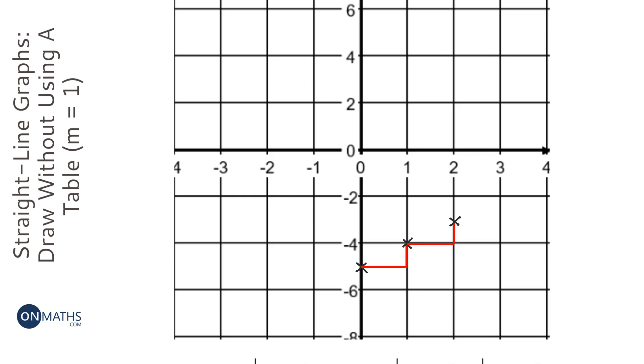We've plotted 3 points and so we can put our ruler down and draw a straight line going through all of them.